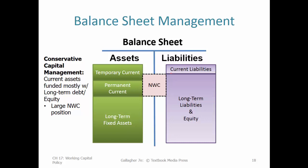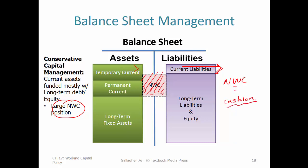In balance sheet terms, the conservative approach shows a very small amount of current liabilities — just a portion of temporary current assets — leaving a very large net working capital cushion. Think of net working capital as the cushion for the company to ride out a downturn: lower sales, lower revenue, lower profits, or even losses. More net working capital equals a bigger cushion. If you're more risk averse, you want a bigger cushion, relying more on long-term financing — long-term debt and equity — to fund the vast bulk of assets.